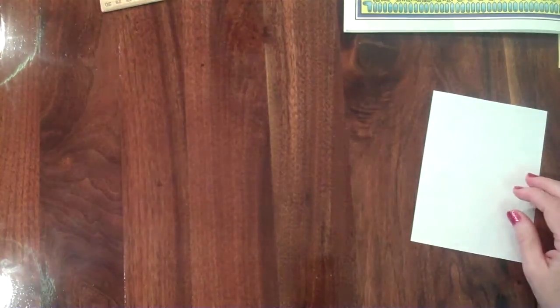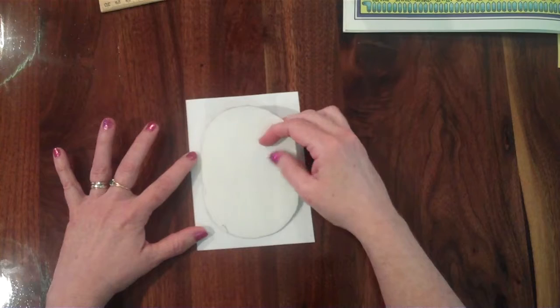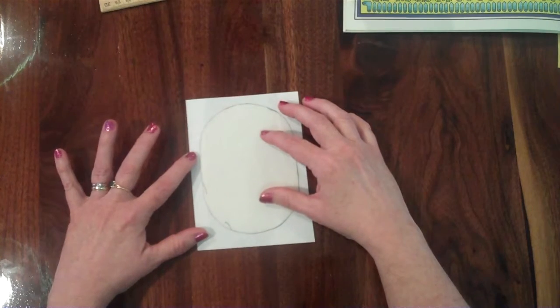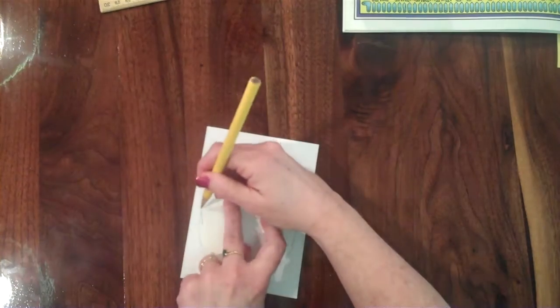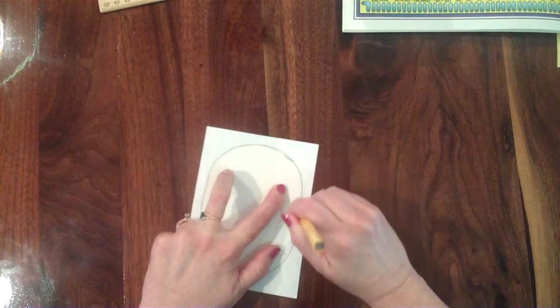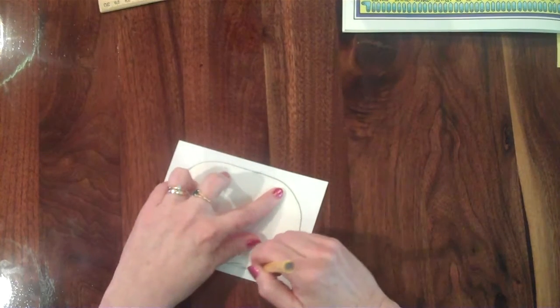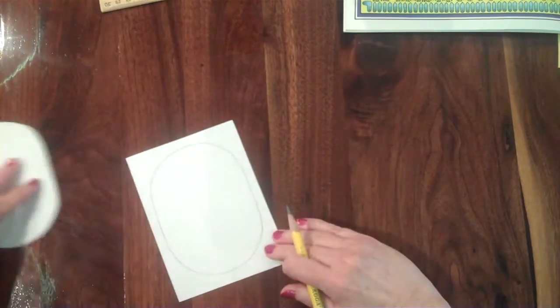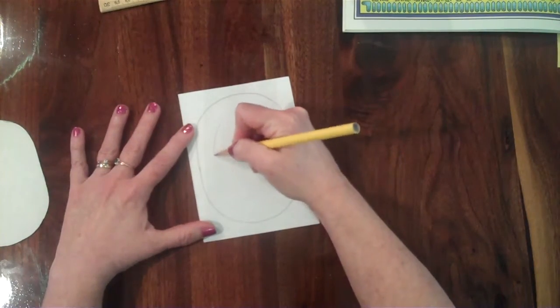Before I can make my cartouche, I need to create the oblong form. So here I have paper and I have an oblong form that I'm going to put down on my paper and trace around it. And then I'm going to just trace around the inside.